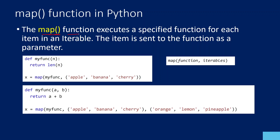The map function takes two parameters. The first parameter is a function — let's assume you created a function called ABCD. It takes that function name as a parameter, and then an iterable. From the iterable object — it can be a list, a tuple, a string, or any object — it takes every item and passes it into the function, executing the function for every item.